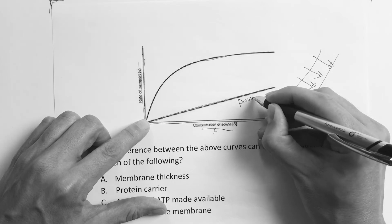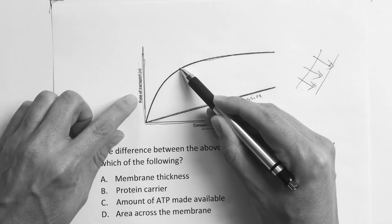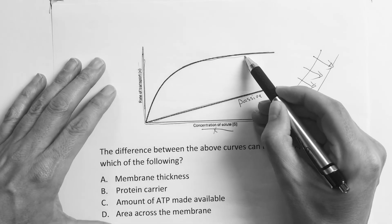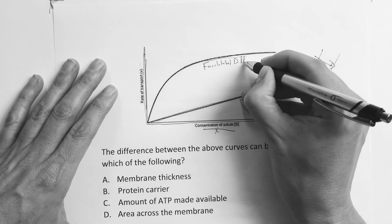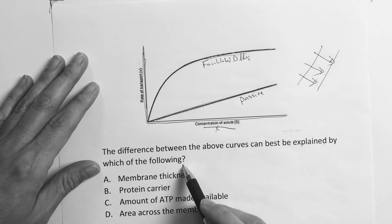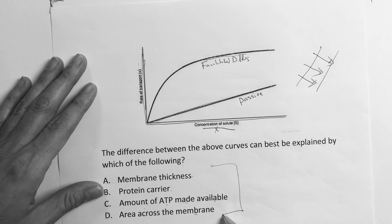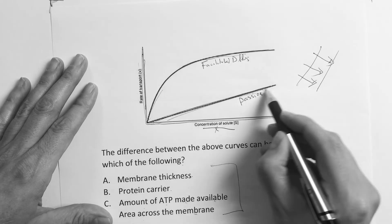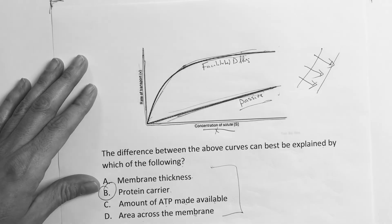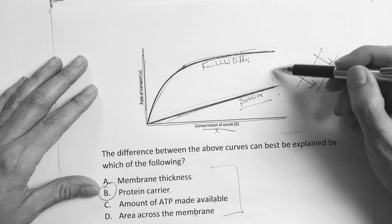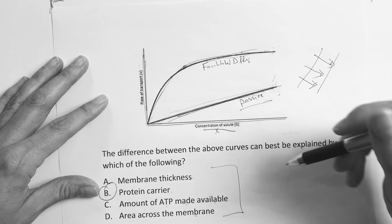The line that keeps going up linearly with concentration is passive/simple diffusion — things just keep flowing across with concentration. The line that rises then levels off is facilitated diffusion — the carrier proteins got saturated. The question asks what best explains the difference between the two curves. The answer is protein carrier amount — one has carrier proteins that become saturated, the other doesn't. Step 1 loves graph interpretation, and this is a great example of that concept.